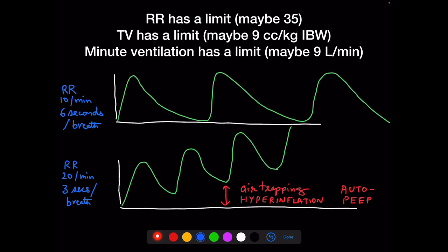In COPD and asthma, the problem is not compliance, so plateau pressures are not the main concern — peak pressures are. If plateau pressure is less than 30, I would go up to 9 cc/kg in a COPD patient. Additionally, in COPD and asthma, patients have difficulty exhaling, and it appears that a minute ventilation above 9 liters per minute leads to air trapping.